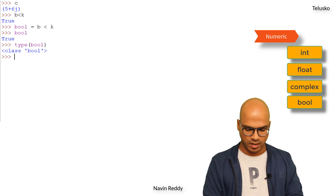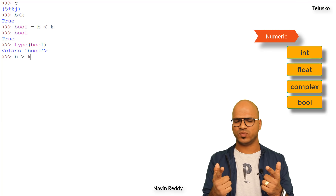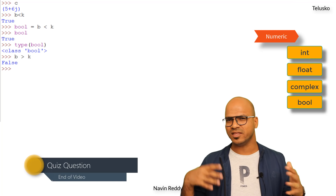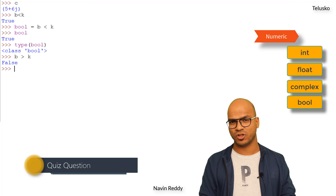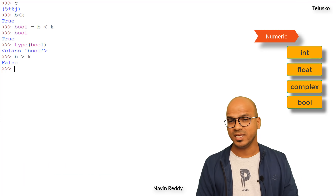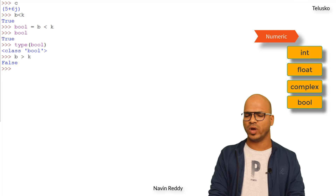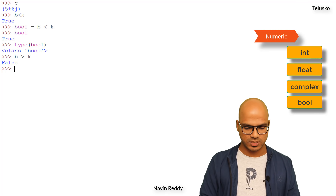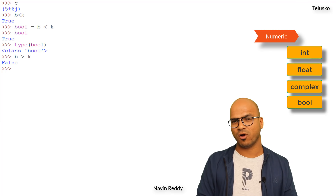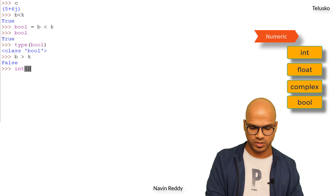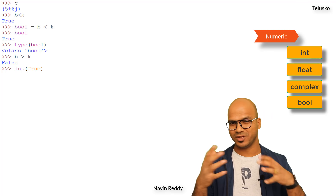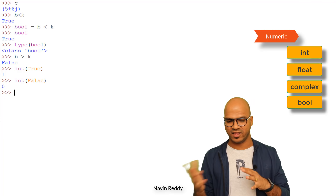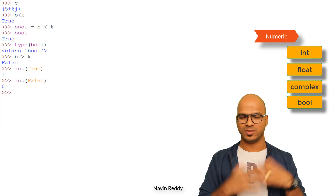We have true and we have false. If I say b is greater than k — b is 5 and k is 6 — it gives false. Now why do I keep bool under numeric? In Python, true is used as 1 and false as 0. If I convert true into int format, we get 1. If I do the same for false, we get 0. So true is 1 and false is 0 — that's your numeric type.